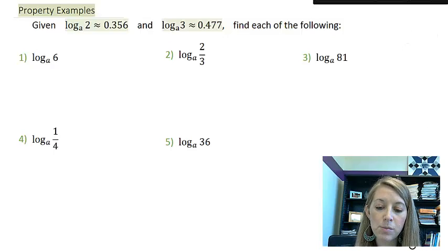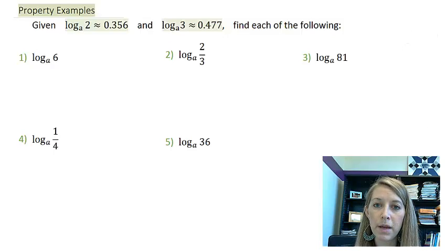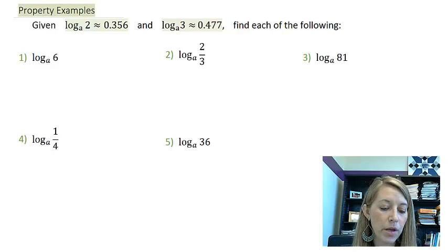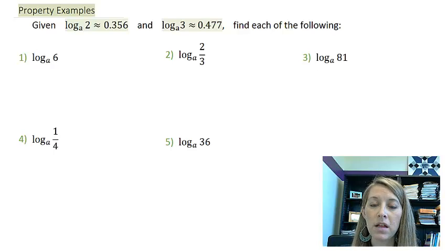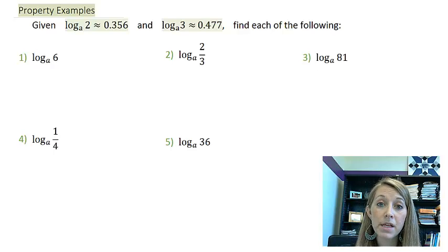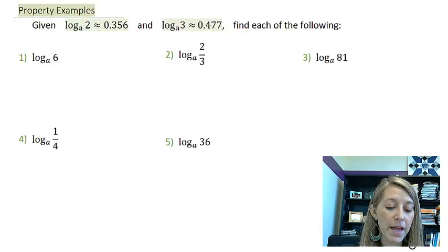It actually gives us approximate values for two logarithmic expressions. Log base A of 2 is approximately 0.356, and log base A of 3 is approximately 0.477. Now, these are not things that you would be able to type in your calculator and figure out exactly, because we do not know what our base is here.